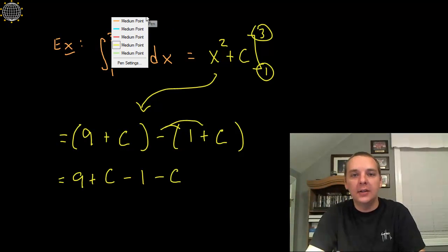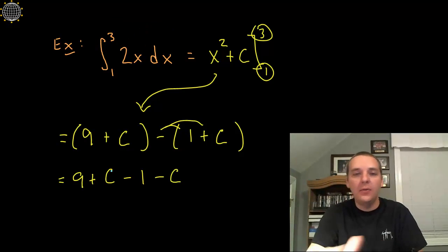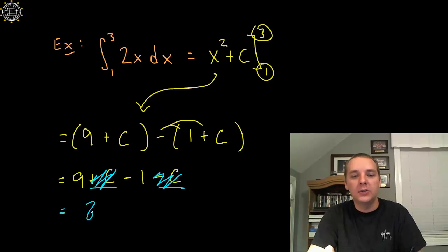And here, herein lies the issue. Every one of these definite integrals, regardless of what you're integrating or what the limits are, you would always wind up with a plus C minus C, and they would negate each other. At the end of the day you just have 9 minus 1, and so you just write your answer as 8.